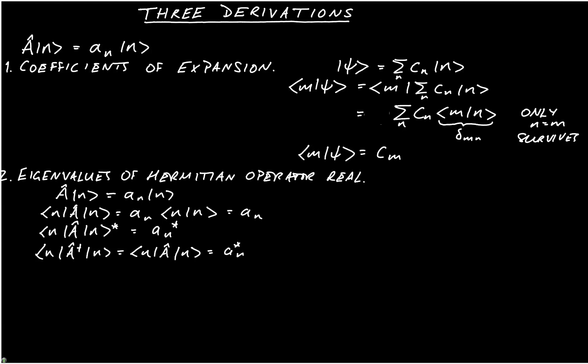But now we have two quantities which are the same. This implies that a_n is equal to a_n*, therefore a_n must be real.